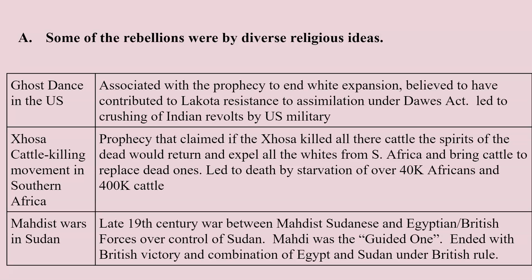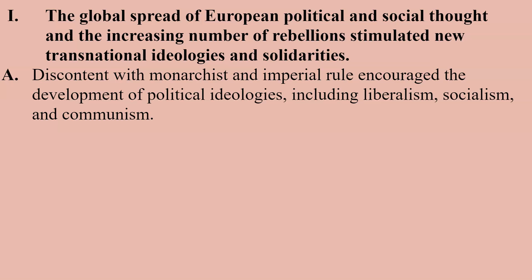Another religious rebellion took place in northern Africa — in Sudan, just south of Egypt — where an Islamic revolt was led by the Mahdi, or 'the Guided One.' It was eventually crushed by a combined British and Egyptian army, leading to a form of joint British-Egyptian rule over Egypt and Sudan.